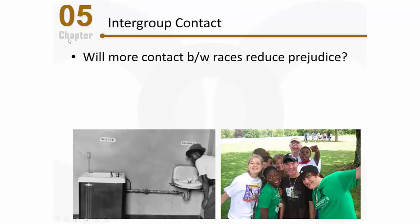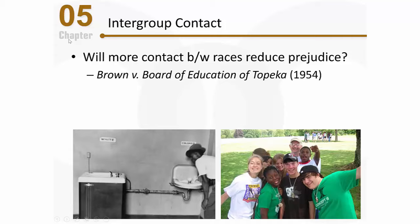So, bottom line question: will more contact between races help reduce prejudice between those two races? This seemed like something really worth pursuing, particularly because in the 1950s, a couple of key things happened that pushed finding an answer to that question. One was an important Supreme Court decision in the case of Brown versus the Board of Education of Topeka. What the Supreme Court found was that racially segregated schools were inherently unequal, and because they were inherently unequal, they were unconstitutional. So, essentially, school districts around the country had to desegregate.